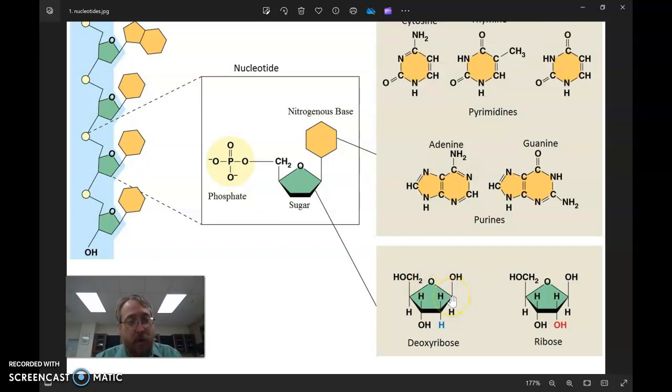We can also take a look at the types of bonds that are made. Oxygen is a high electronegative atom. Nitrogen is a high electronegative atom. Carbon is a moderate electronegative atom. So, anytime oxygen and carbon or nitrogen and carbon interact with each other, they're going to make partial charges when they bond with each other.